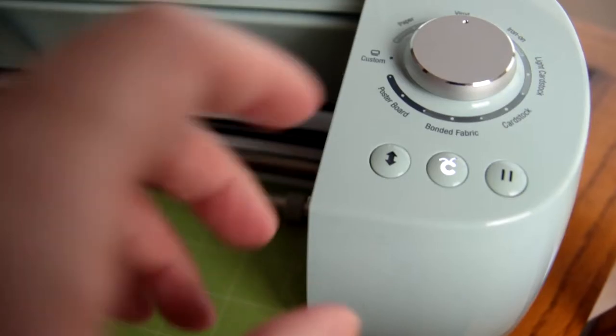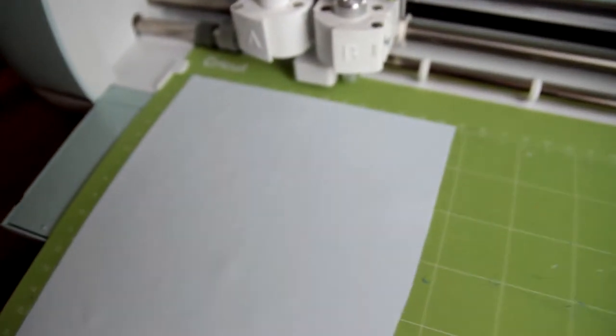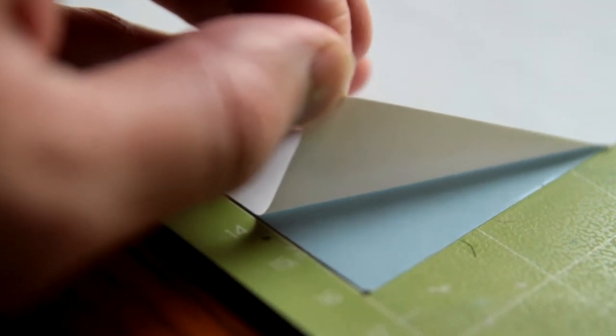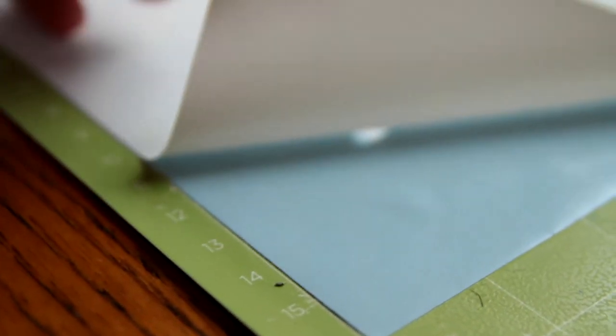Okay, so once your design is finished cutting, it's time to remove the excess vinyl from around the area. You want to start from a corner. Make sure you don't lift the back, but just lift the vinyl. You're going to pull it up until you get to your design and slowly pull back, making sure not to pull up any of the cut areas.